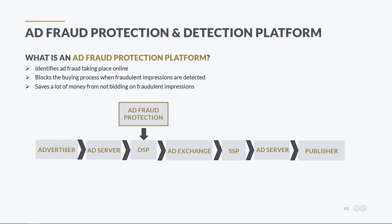Another significant participant in the programmatic advertising ecosystem is the ad fraud detection and protection platform. Such platforms use machine learning and advanced bot fingerprinting technologies to identify ad fraud taking place in the online advertising world. An ad fraud protection platform can also block the buying process when fraudulent impressions are detected. Therefore, programmatic advertisers could save a lot of marketing money from not bidding for such impressions.